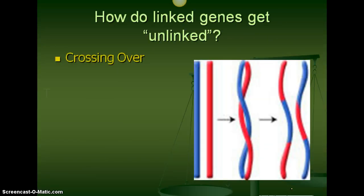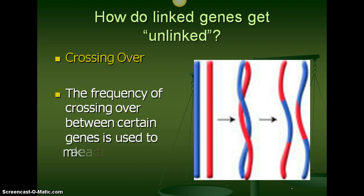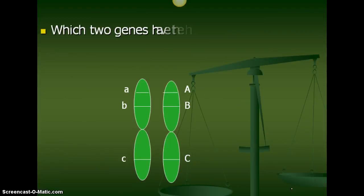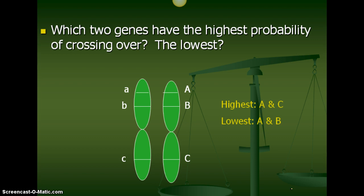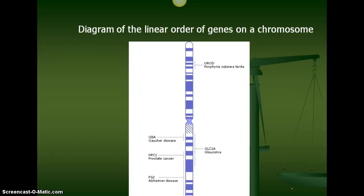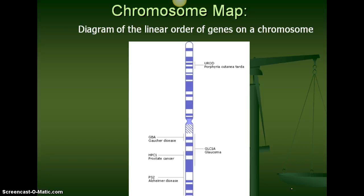Here's an image of what that looks like with crossing over. If genes are close together, they have a very small chance of being separated. If genes are far apart, they have a really big chance of being separated during crossing over. Here's another example: which two genes have the highest probability of crossing over and the lowest? A and C have the highest chance of being separated during crossing over, and A and B have the lowest chance of being separated. You have a picture of this on your notes packet showing what a real chromosome looks like with particular traits close together.